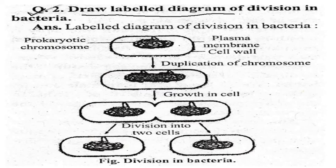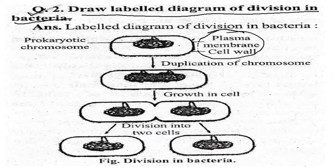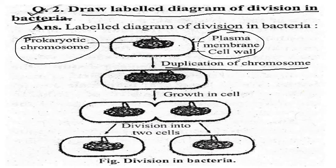Draw the labeled diagram of division in bacteria. The diagram shows plasma membrane, cell wall, duplicate chromosome, and prokaryotic chromosome. It is going to divide into two parts. First: duplication of chromosomes. Then growth in the cell. Then division into two cells — and that figure shows division in bacteria.